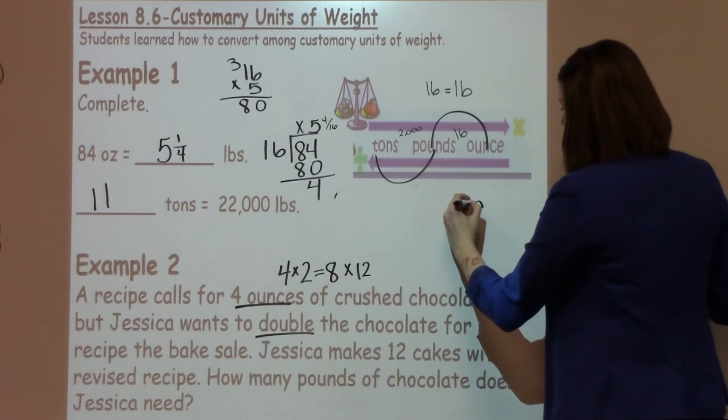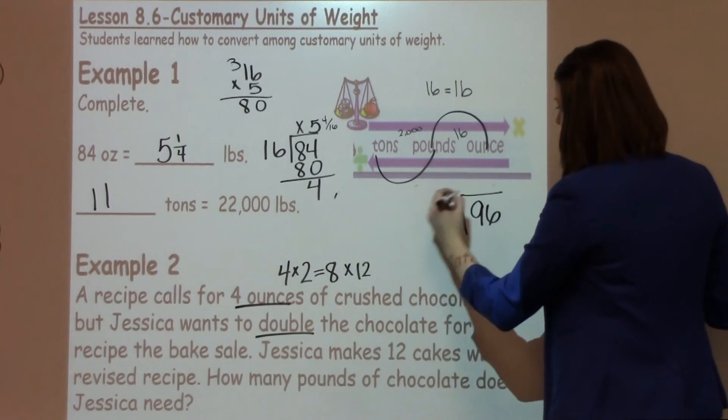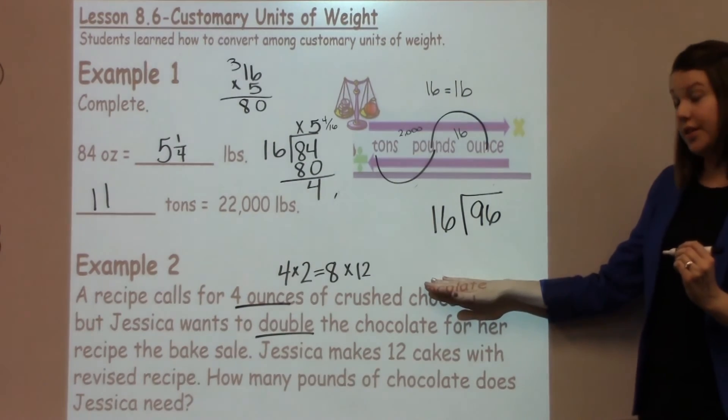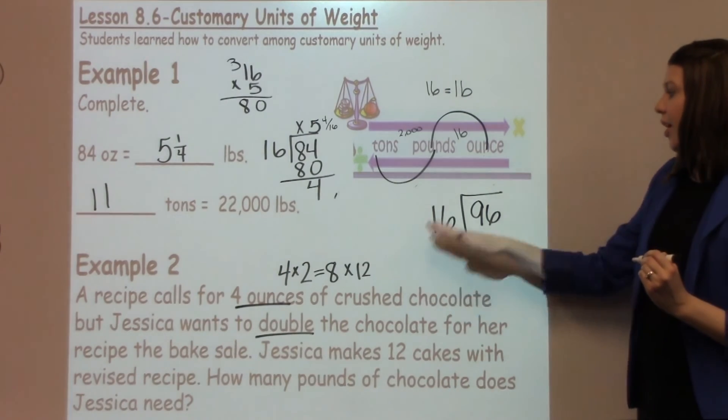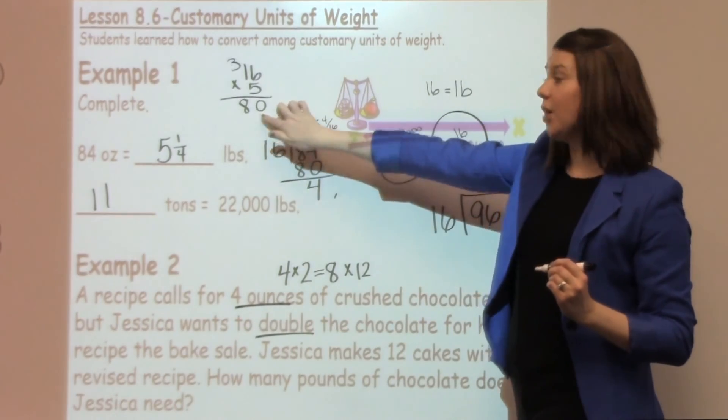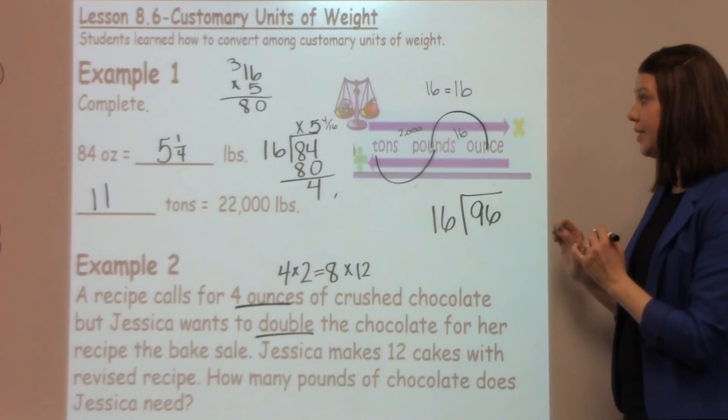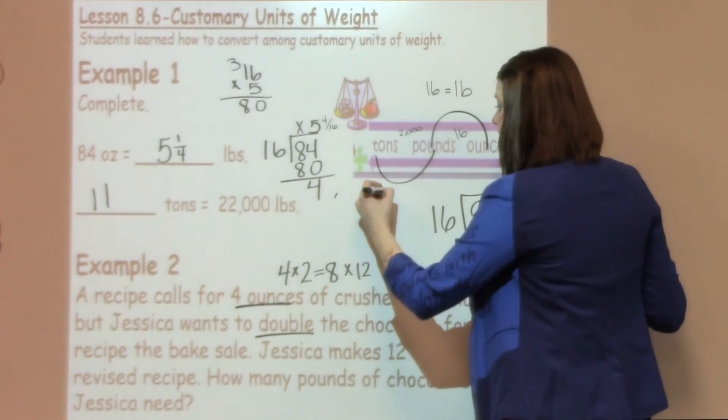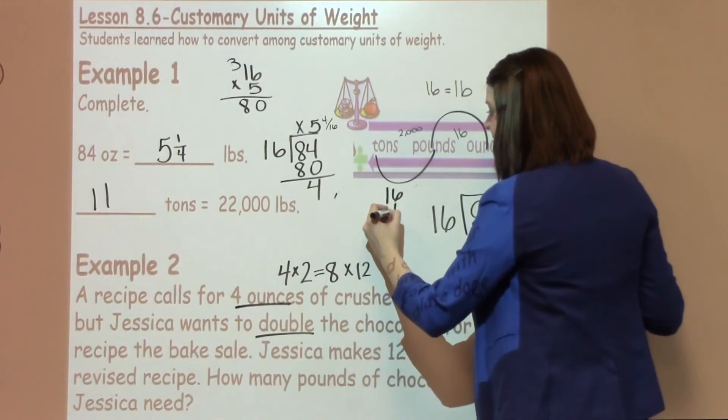So I'm going to take my 96 divided by my 16. Now a lot of students don't know their 16s, so a good thing to do is go ahead and guess and check. I know that I already have 16 times 5 from up here, which I know is going to be very close. I'm going to see if I go up one more, and that will help me solve this question. So I'm going to try 16 times 6.